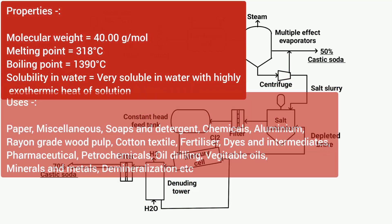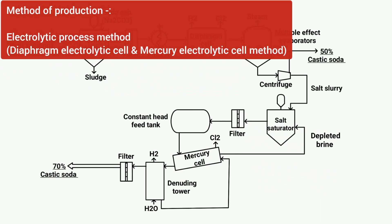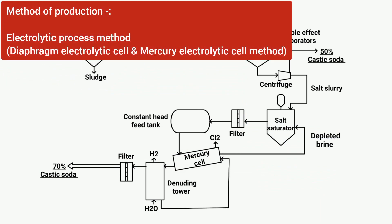And this is its properties and uses. You can take a screenshot of it. And if we talk about the method of production, then in today's video, we will learn how caustic soda is made through electrolyte process method or diaphragm electrolytic cell and mercury electrolytic cell method.